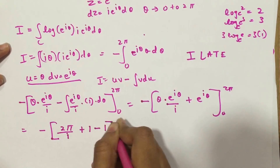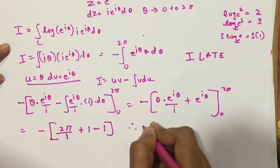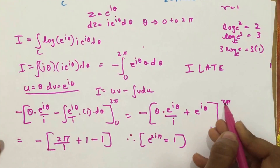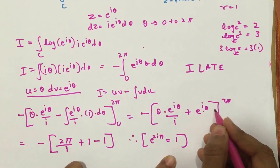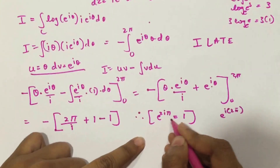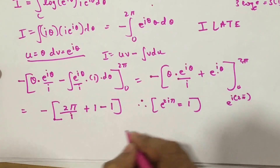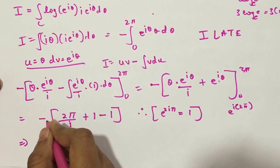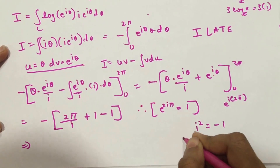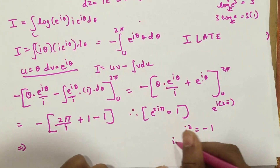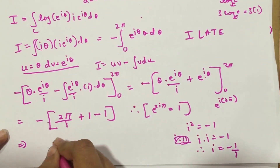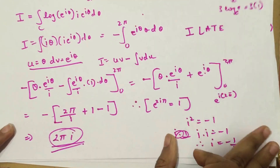After substituting the limits, I get (2π/i) + 1 − 1. Now, e^(2πi) = cos(2π) + i·sin(2π) = 1. Since there's a minus sign outside and 1/i = −i (because i² = −1, so i·(1/i²) = −i), my final answer is 2πi. This proves the integral equals 2πi.